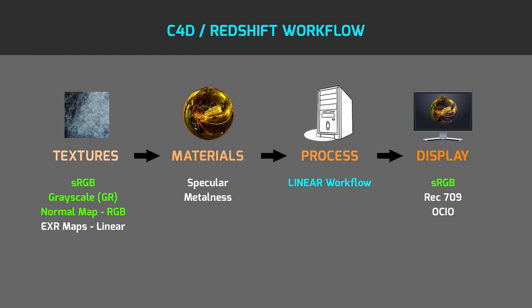The next texture category is EXR maps. EXR uses a linear color space and is able to store high dynamic range data, so it's the ideal format for HDRI maps or high quality 32-bit displacement maps.